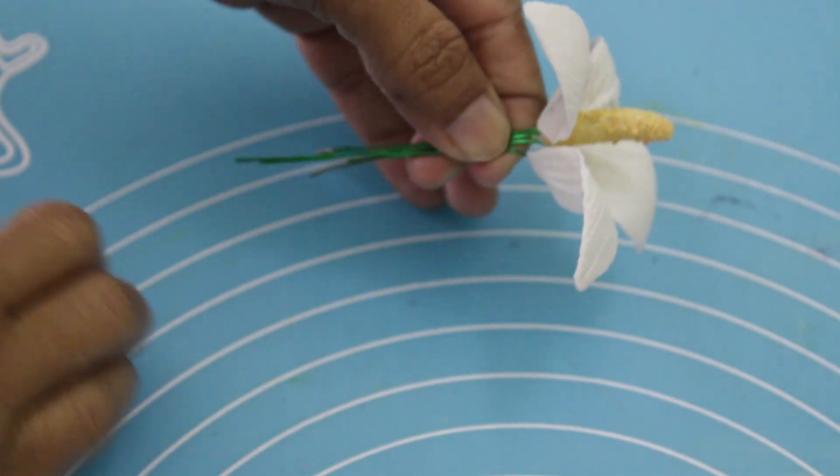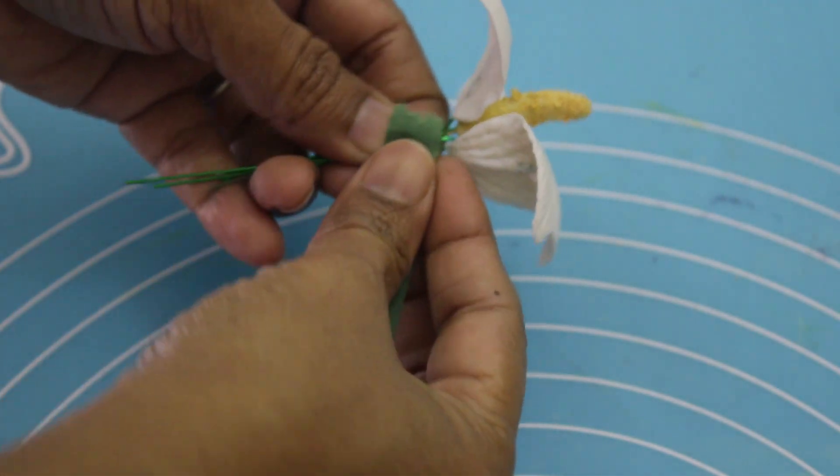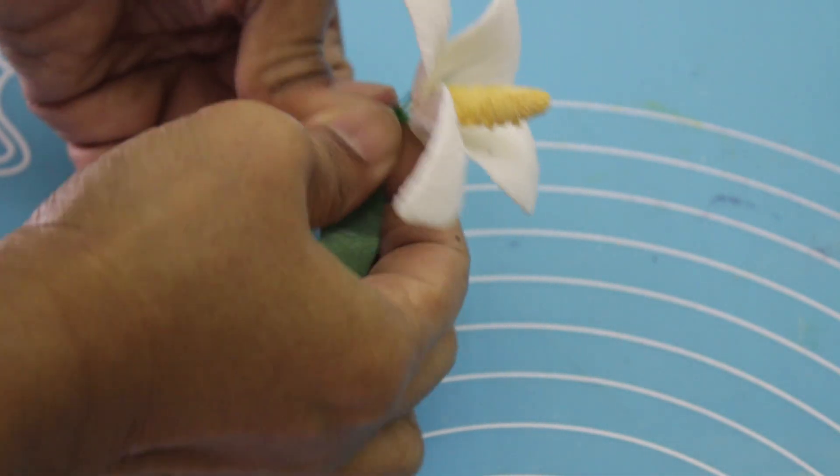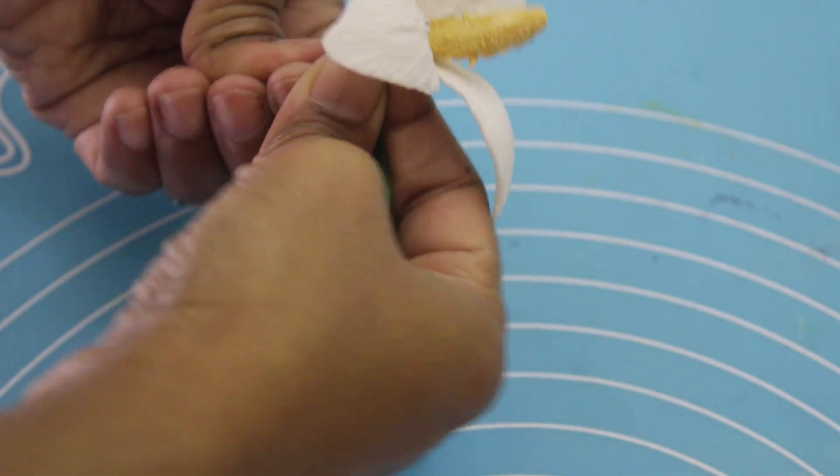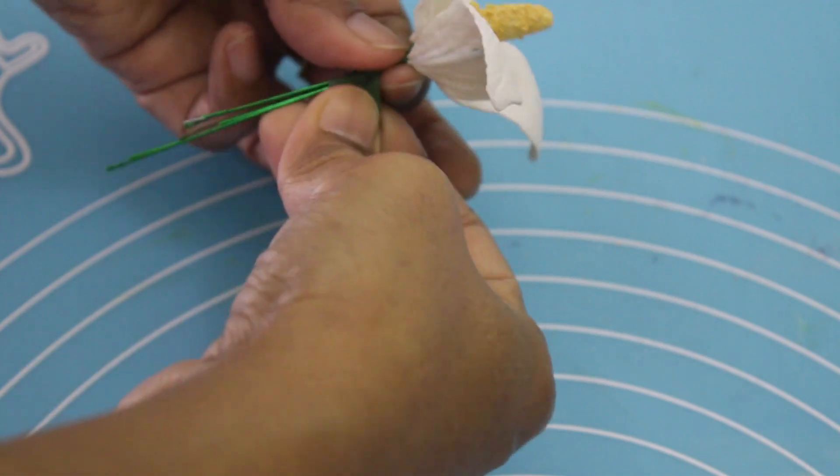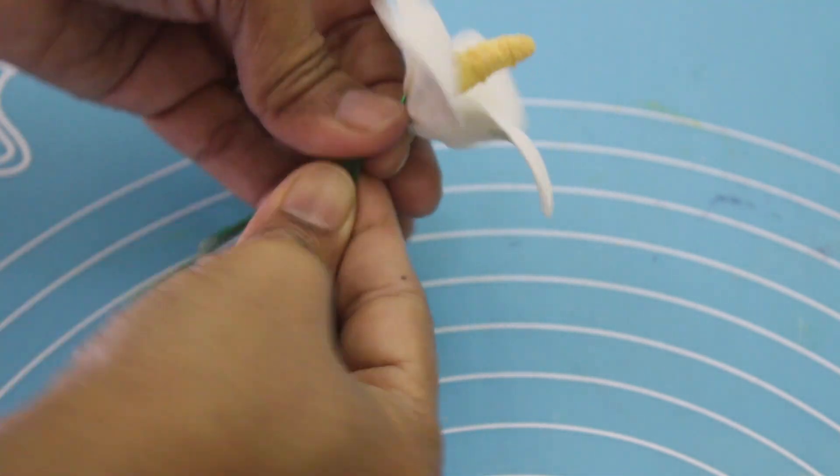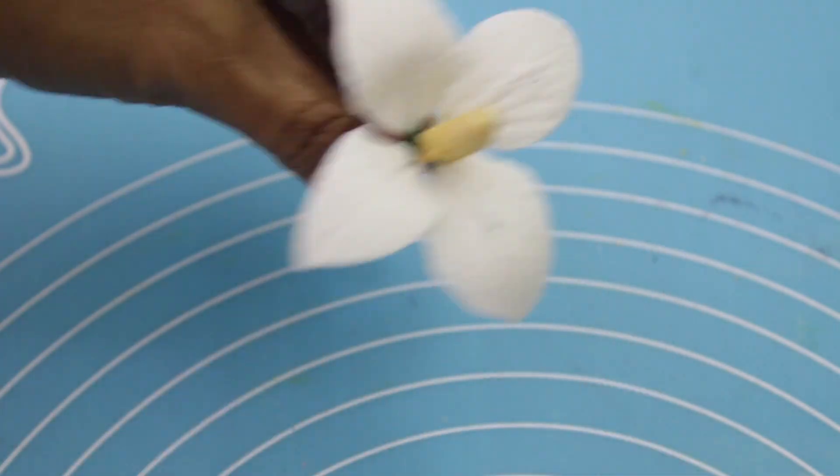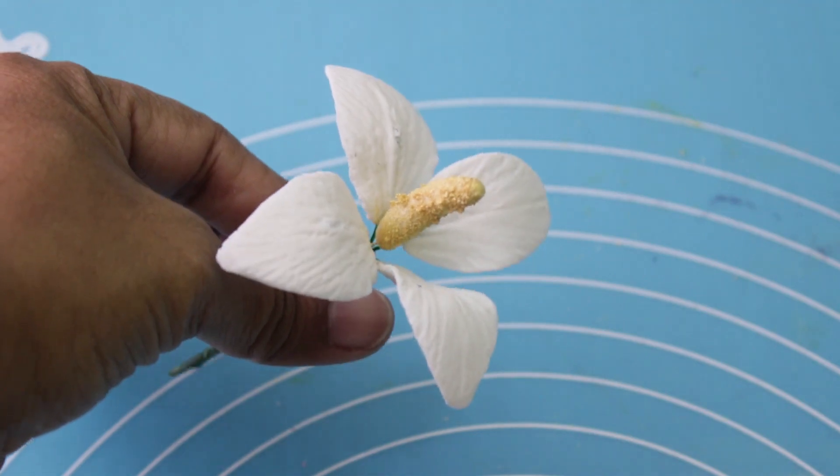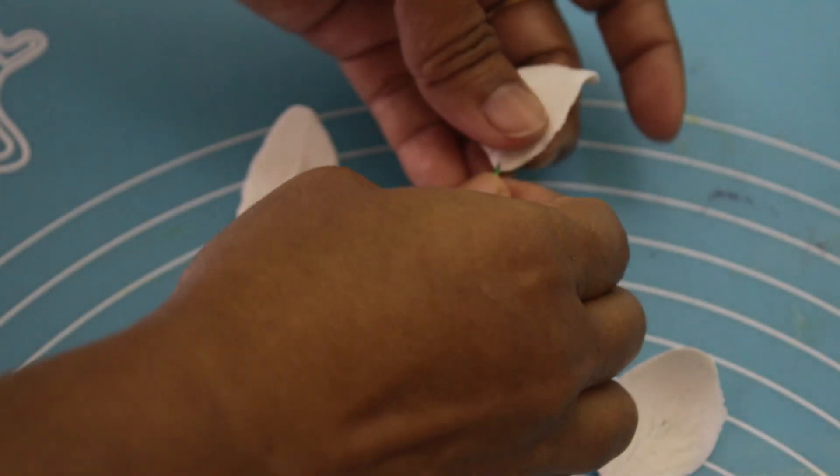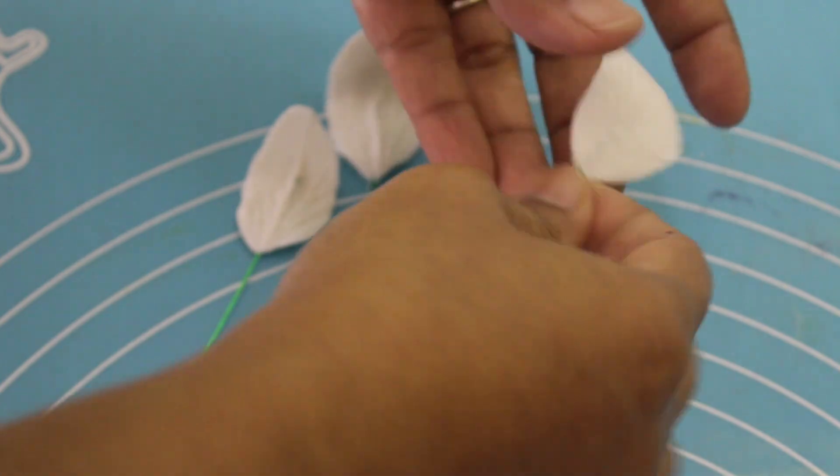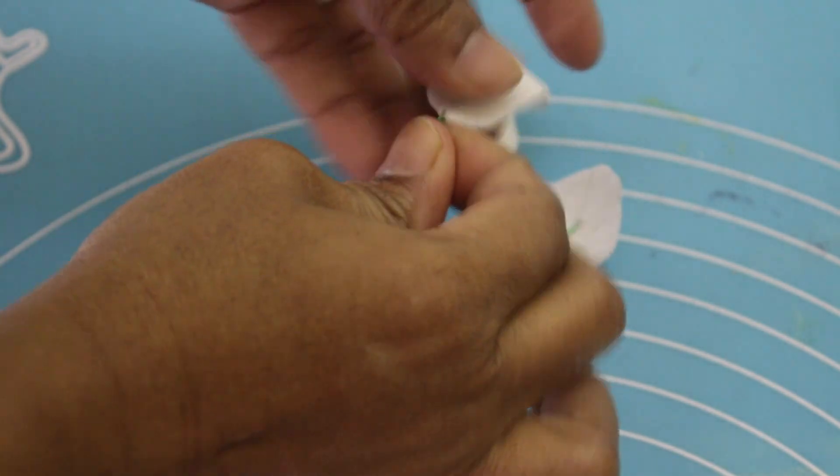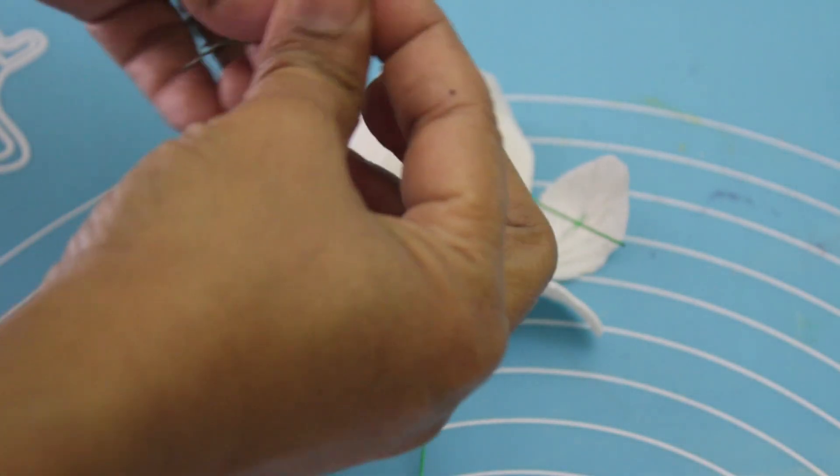I'm using this technique to put them together. It's very easy but this flower looks very pretty. You can use any shape petals for this flower. Here is our one flower. Now I'm making the second one. Bend a little bit.